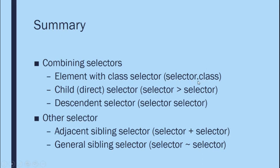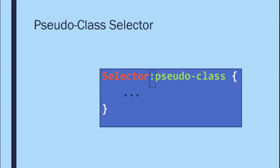In summary, combining selectors: element-with-class has no space with a dot; the direct child selector uses a greater-than sign; the descendant selector uses a space between selectors. There are many other selectors that are less commonly used. We use pseudo-class selectors when combination selectors can't handle a use case, or when we want to capture user interactions like hovering over a link.